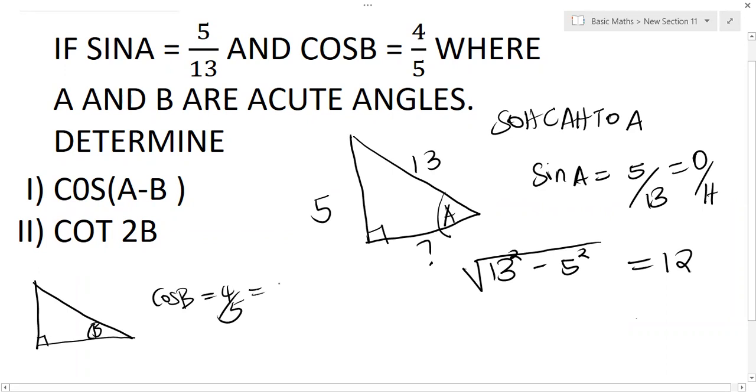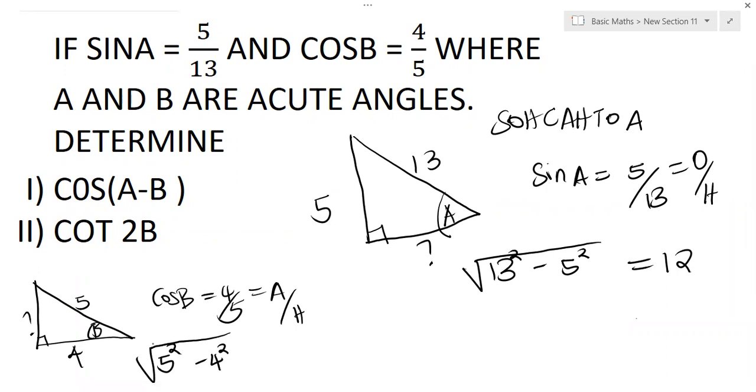So getting the opposite will be 5 squared minus 4 squared square root using the Pythagorean theorem. So that will give us 25 minus 16 which is 9, the square root of 9, so we'll have this as 3.